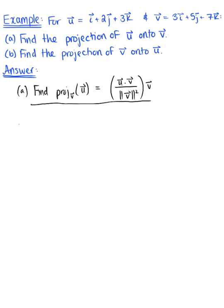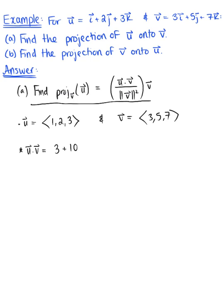Let's think about what we're given. Rewriting in component form, vector u is defined as ⟨1, 2, 3⟩ and vector v is defined by the components ⟨3, 5, 7⟩. We start with the dot product: u·v = 1×3 + 2×5 + 3×7 = 3 + 10 + 21 = 34.